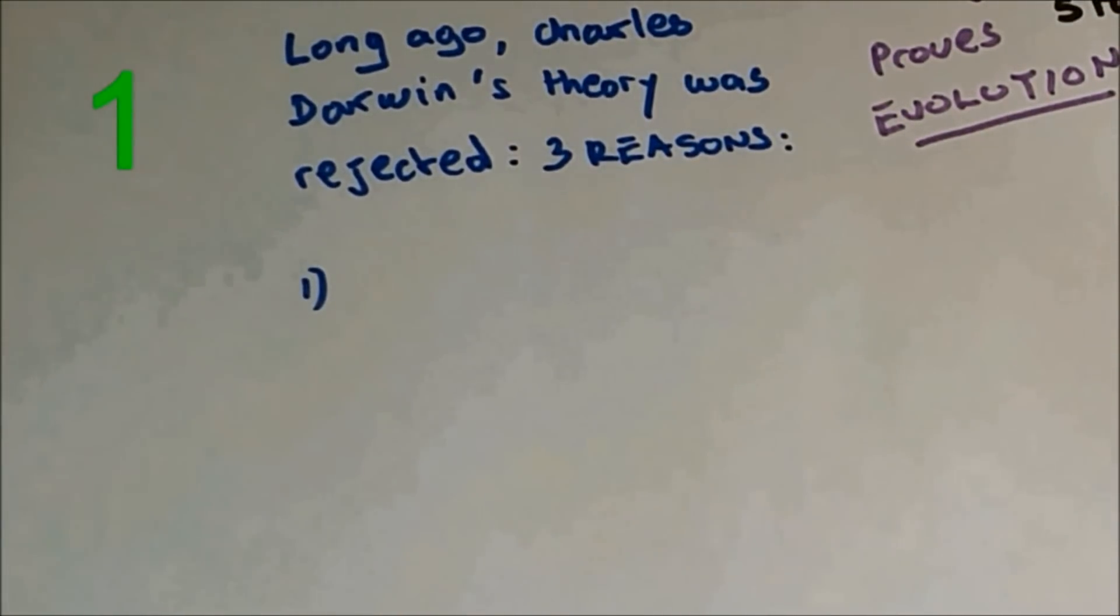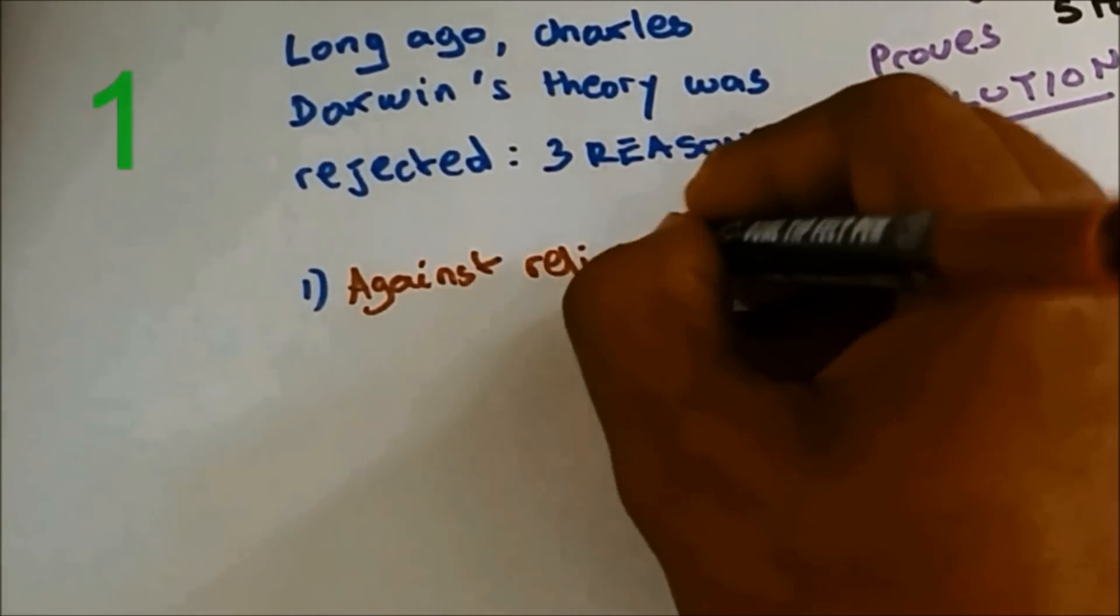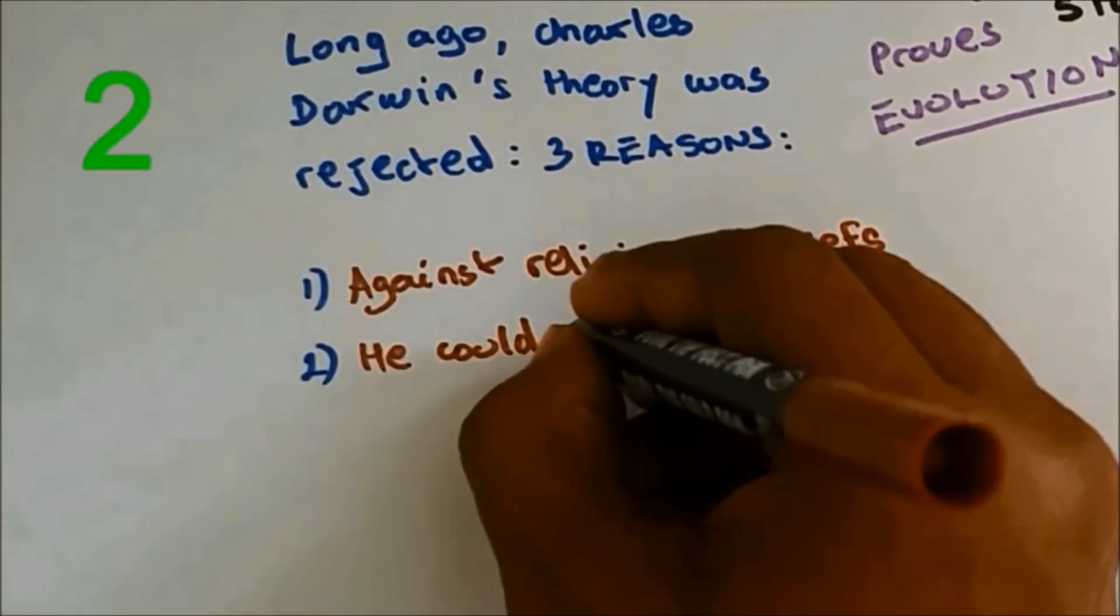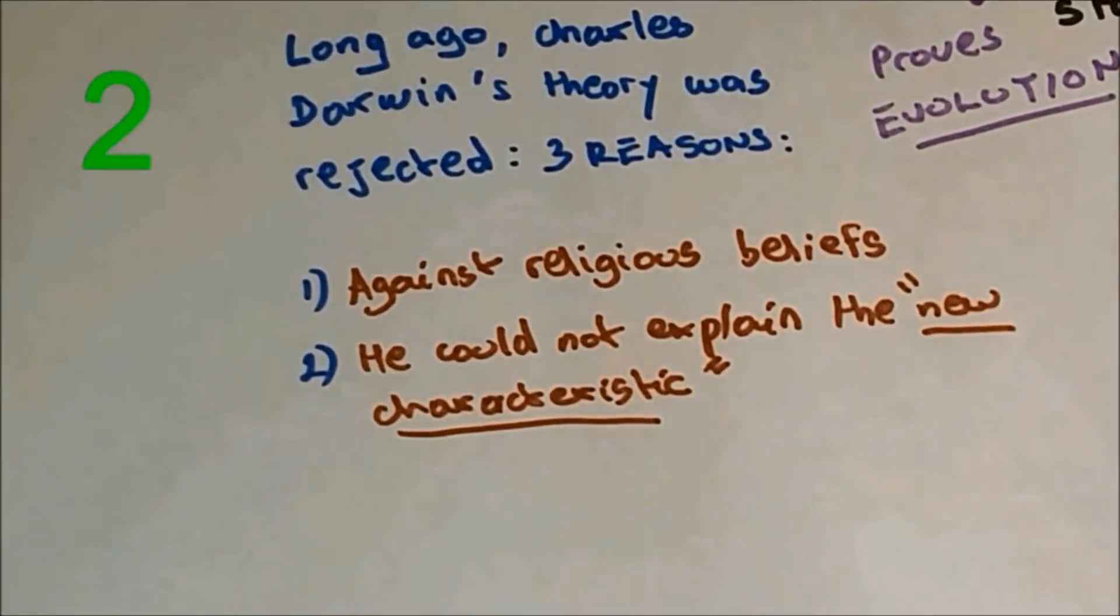Number one, his theory was against religious belief. Number two, he could not explain the new characteristics. For example, a rabbit used to have small ears and suddenly the new babies will have bigger ears. The reason why a new characteristic was formed is because of mutation.